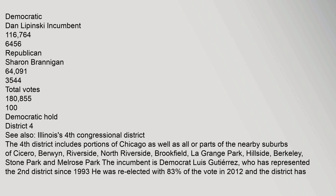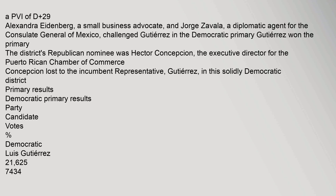District 4 — Illinois's 4th Congressional District. The 4th District includes portions of Chicago as well as all or parts of the nearby suburbs of Cicero, Berwyn, Riverside, North Riverside, Brookfield, La Grange Park, Hillside, Berkeley, Stone Park, and Melrose Park. The incumbent is Democrat Luis Gutierrez, who has represented the district since 1993. He was re-elected with 83% of the vote in 2012, and the district has a PVI of D+29. Alexandra Eidenberg, a small business advocate, and Jorge Zavala, a diplomatic agent for the Consulate General of Mexico, challenged Gutierrez in the Democratic primary. Gutierrez won the primary. The district's Republican nominee was Hector Concepcion, the executive director for the Puerto Rican Chamber of Commerce.